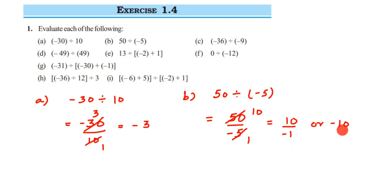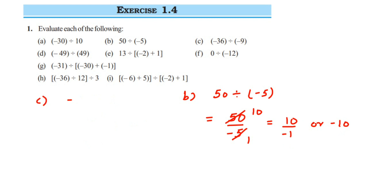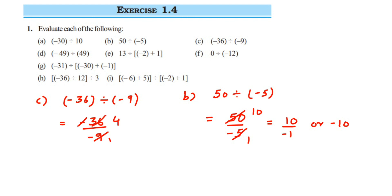Problem c: minus 36 divided by minus 9. Writing in fractional form: minus 36 divided by minus 9. Cancelling — 9 fours are 36 — so we get 4. Now, in this question we have two negative signs, so the signs cancel each other and we get a positive result. The answer is 4.